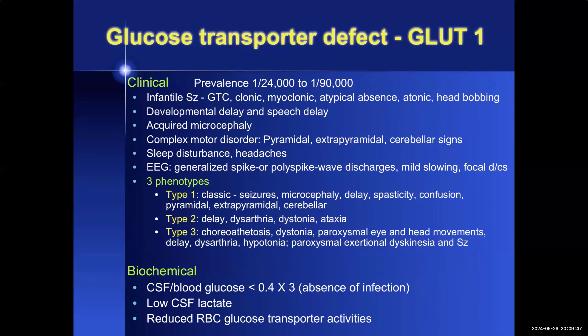The type 2 form presents with dysarthria, dystonia, and ataxia. The type 3 form is highlighted by choreoathetosis, paroxysmal eye and head movements, or paroxysmal exertional dyskinesia and seizures. The seizures are variegate and may include generalized tonic-clonic, clonic-myoclonic, atypical absence, and atonic seizures. The EEG may show generalized spike or polyspike-in-wave discharges, mild slowing, or focal discharges. These children also have sleep disturbances and headaches.